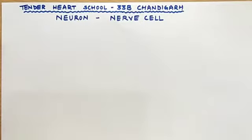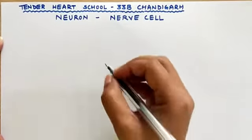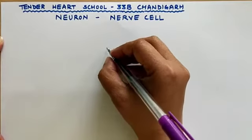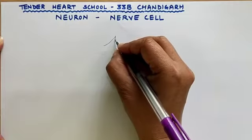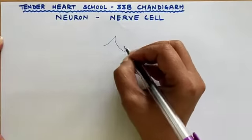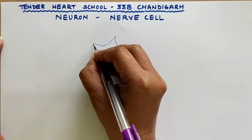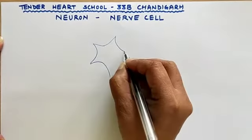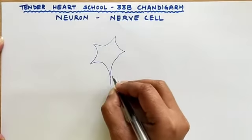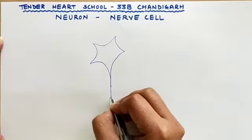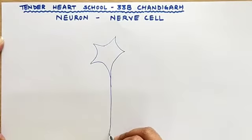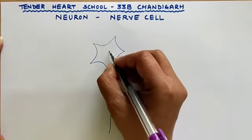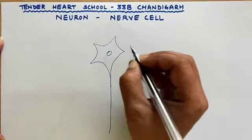Good morning students. Today we will learn to draw the nerve cell. So let us just start with it. First we will draw the cytone — the cell body of the nerve cell.